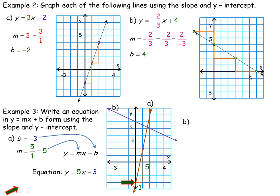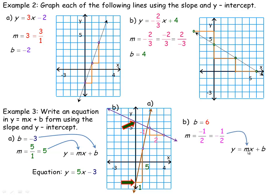For line B, the blue line, the y-intercept is at 6 — the graph crosses the y-axis at 6. To read the slope, I use two clear points on the line. Going from left to right, I go down 1 and then right 2. The vertical change is the rise — negative 1 — and the horizontal change is the run — 2. So the slope is negative 1 over 2, which is negative one-half. One of the numbers is negative so the slope is negative. Using y equals mx plus b, negative one-half is the slope and 6 is the y-intercept, giving the equation y equals negative one-half x plus 6. That's the end of the lesson.